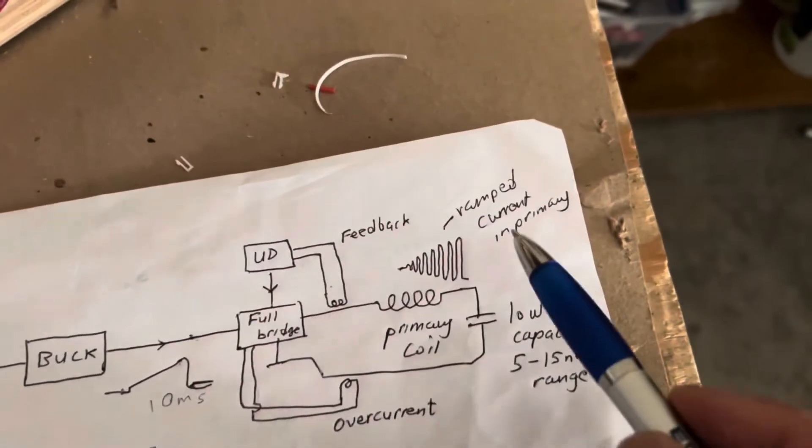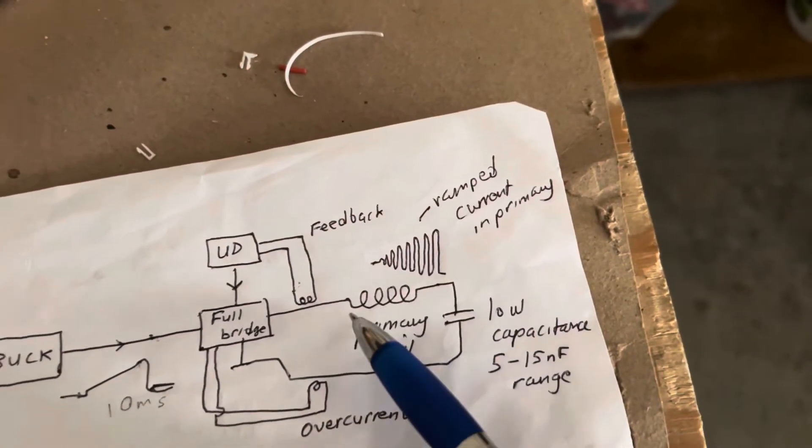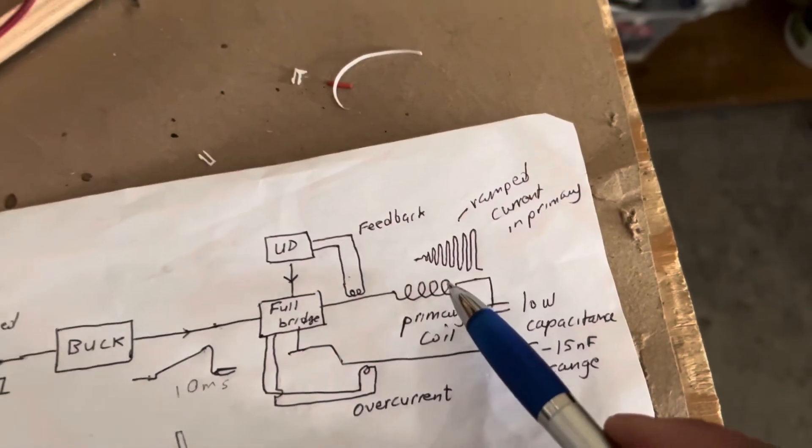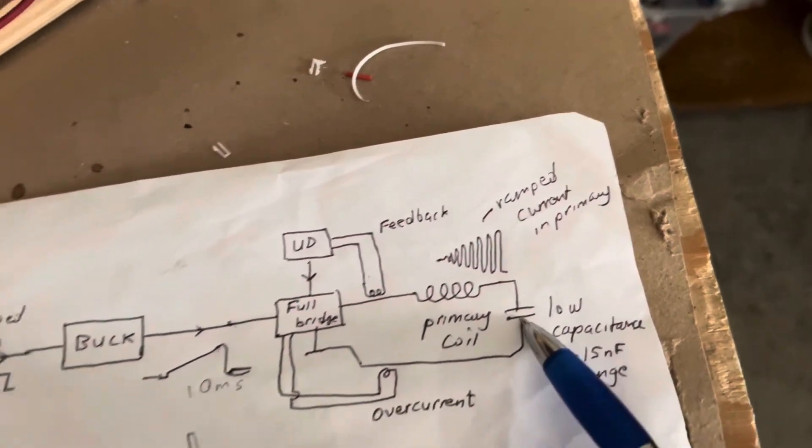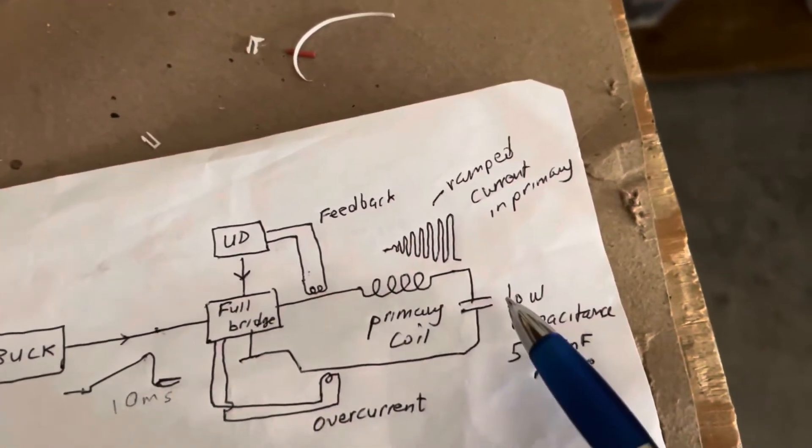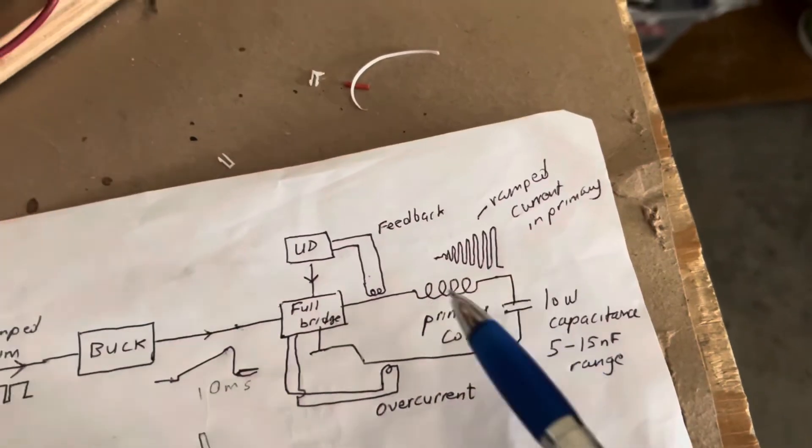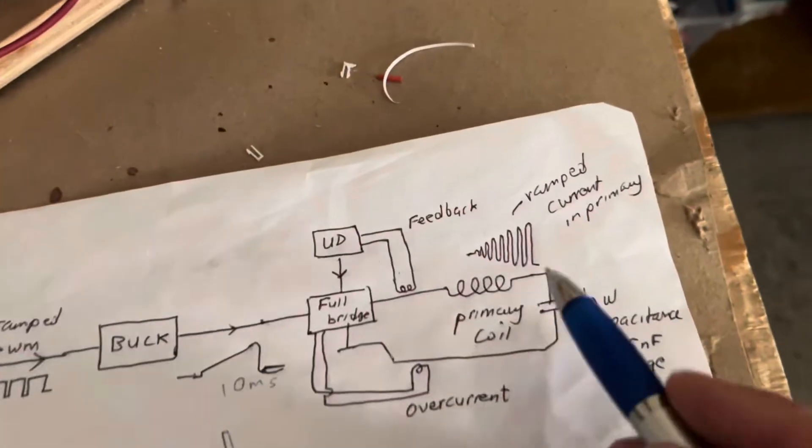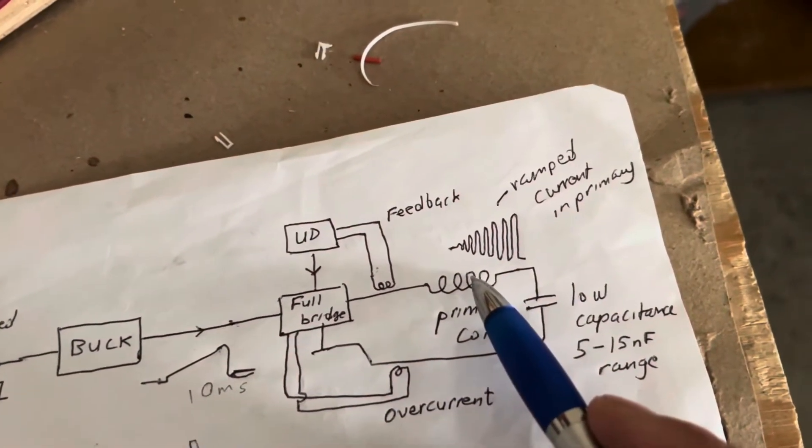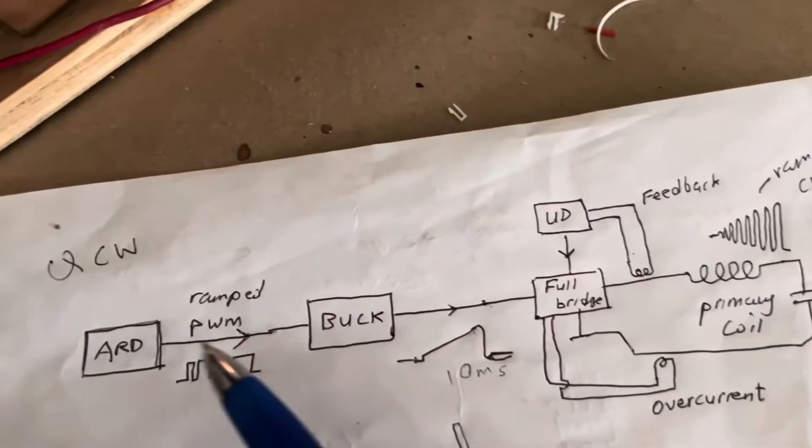Now typically these QCW coils have a lot of primary turns and are low capacitance, whereas a double resonant regular Tesla coil has a relatively higher resonant capacitance here and fewer turns. You want more coupling between your primary and your secondary with a QCW coil, whereas with a double resonant you want less coupling.